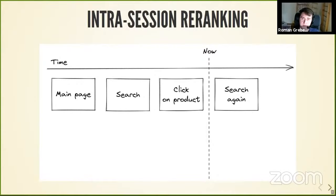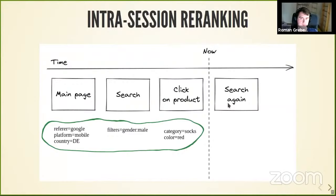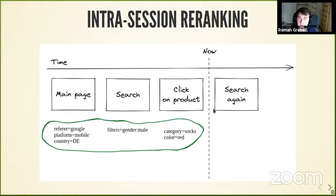But we can still do something: intrasession ranking, intrasession personalization. When a customer lands on the main page and does some searches, interacts with products, we already know quite a lot of metadata — they came from Google, from mobile, from a certain country, toggled a gender filter, clicked on something from the socks category, and the color was red. We already know a lot, and if we can rank the products right here, we can improve the ranking dramatically and hopefully improve business metrics for our customers.